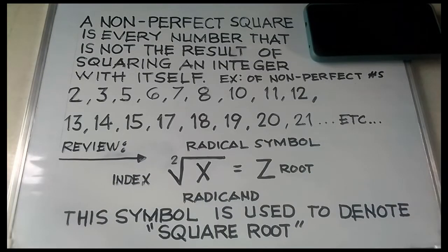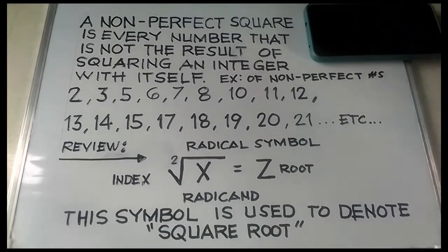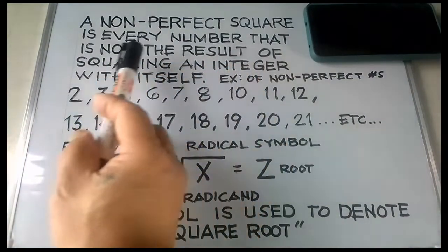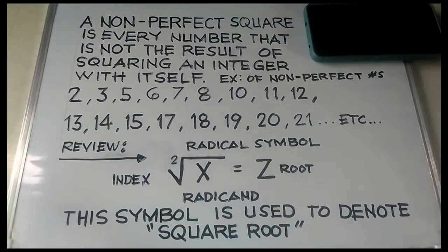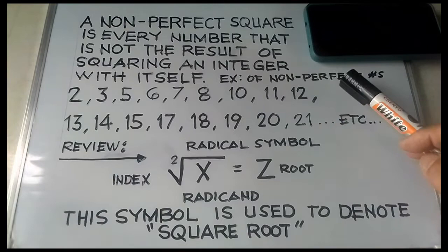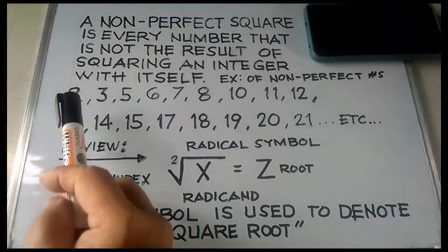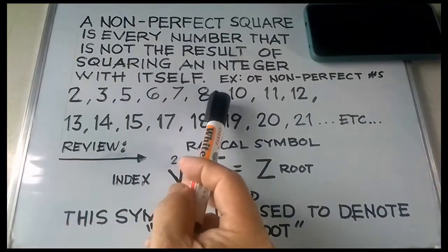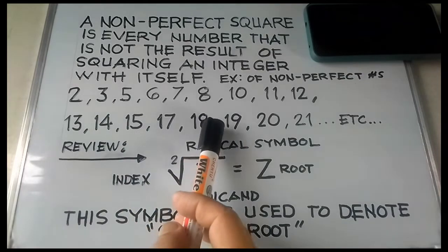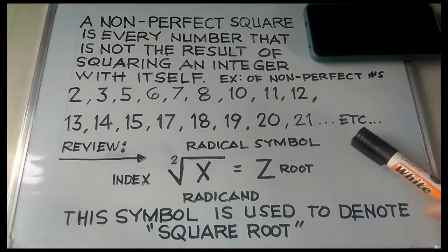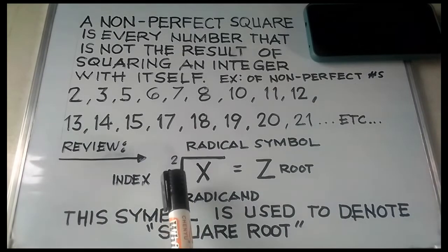Hello guys, for today's video I am going to discuss non-perfect square roots. A non-perfect square is every number that is not the result of squaring an integer with itself. Examples of non-perfect numbers: 2, 3, 5, 6, 7, 8, 10, 11, 12, 13, 14, 15, 17, 18, 19, 20, 21, etc. Now let's review this symbol.